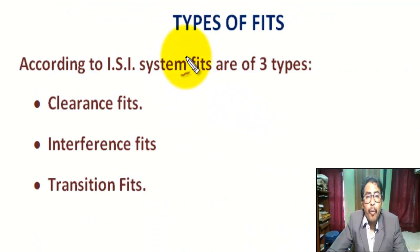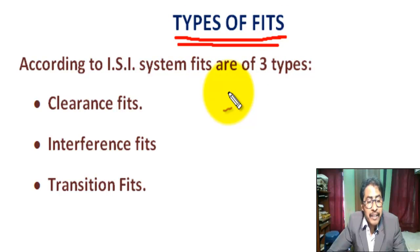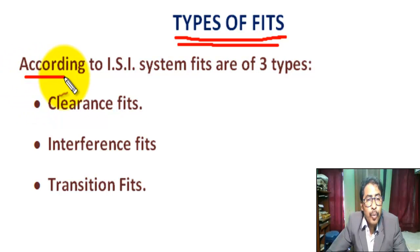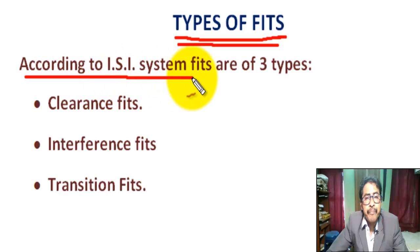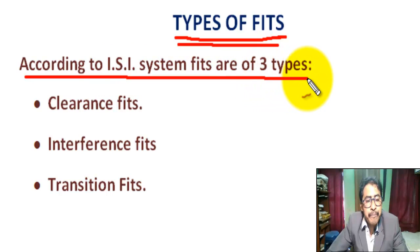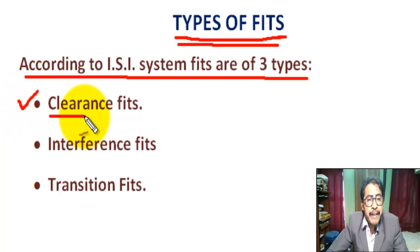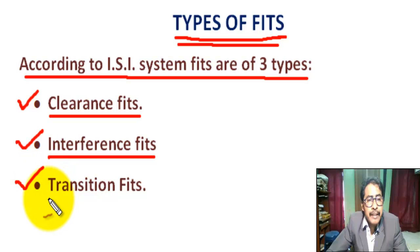Now, what are the types of fit? Rotating parts require a definite amount of clearance between stationary and moving elements. According to the ISI system — Indian Standards Institution — fits are of three types: clearance fit, interference fit, and transition fit.